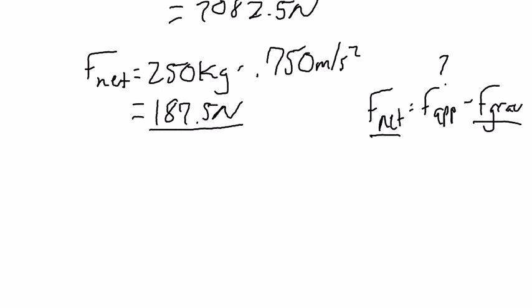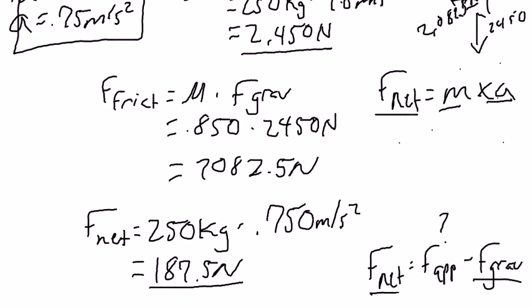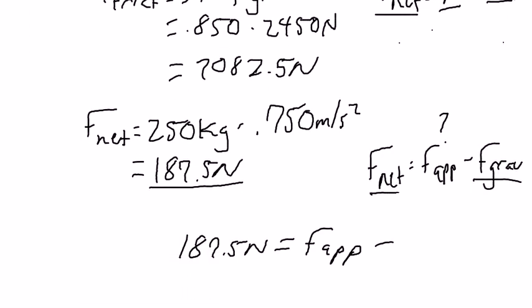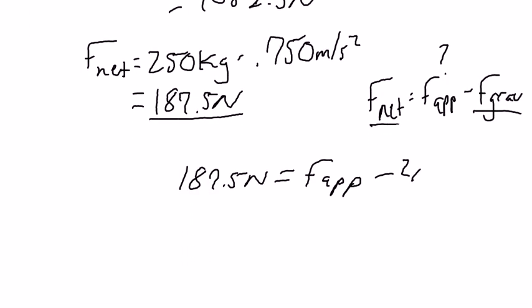So, F net is equal to 187.5 newtons, and we're going to set it equal to the force applied minus our gravity force, which all the way up here says 2,450 newtons.